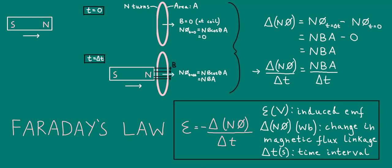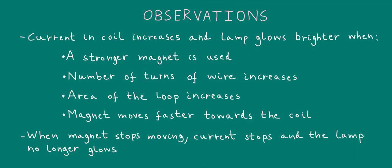Let's see how Faraday's law can help us understand the observations we noted from the simulation. For the first four observations, when the magnet is moved close to the coil from far away, we found that the rate of change of flux linkage was NBA divided by Δt. So from Faraday's law, the induced EMF is proportional to NBA over Δt. From this, we see that the induced EMF is proportional to B, the magnetic flux density, which explains why the induced current increased and the lamp glowed brighter when a stronger magnet was used. Similarly, the induced EMF is also proportional to N and A, which explains why increasing the number of turns of wire and the area of the loop increased the current and made the lamp glow brighter.